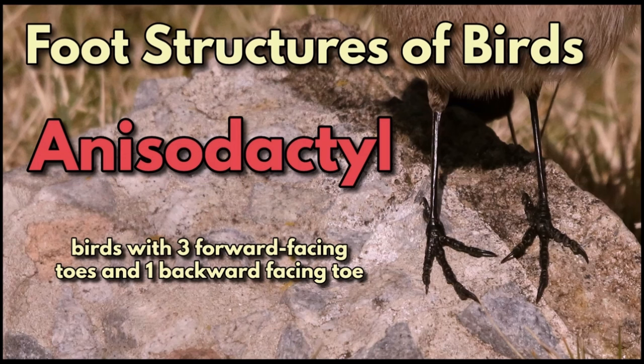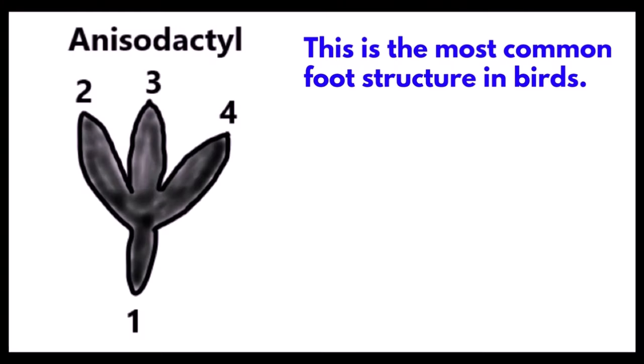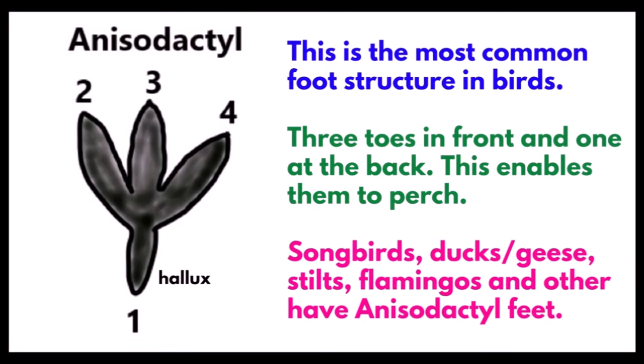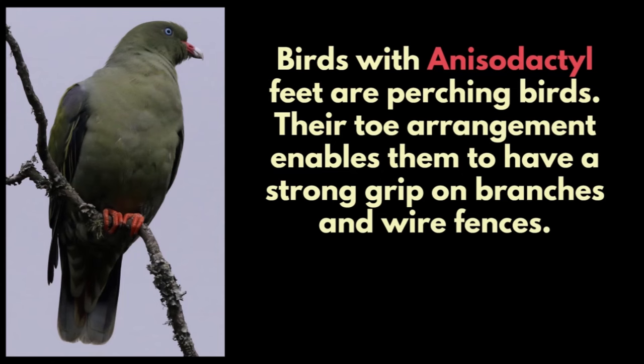Anisodactyl: birds with three forward-facing toes and one backward-facing toe. This is the most common foot structure in birds — three toes in front and one at the back. This enables them to perch. Songbirds, ducks and geese, stilts, flamingos and others have anisodactyl feet. Birds with anisodactyl feet are perching birds.